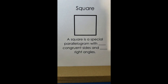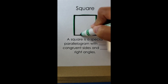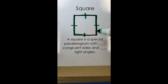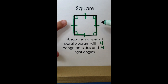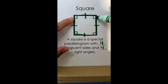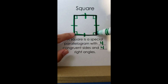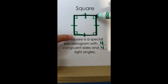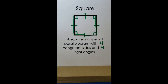To be classified as a square, a quadrilateral has to follow every rule we've talked about. A square is a special parallelogram with four congruent sides and four right angles. Opposite sides are equal and parallel. So a square is every single type of quadrilateral — square, rectangle, rhombus, parallelogram, trapezoid, and quadrilateral.